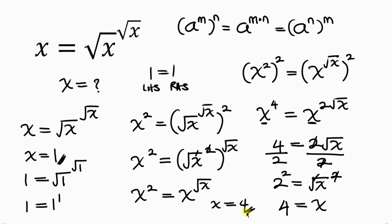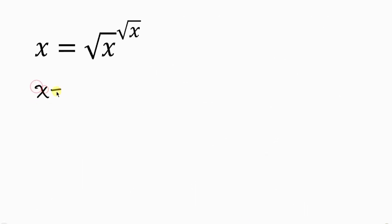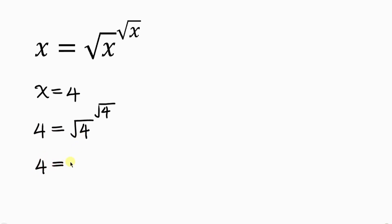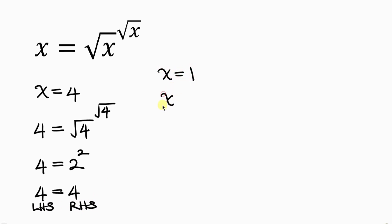Let's verify x equals 4. On the left-hand side we have 4. On the right-hand side, the square root of 4 is 2, raised to the power of the square root of 4, which is also 2. So we get 2 squared equals 4, and the left-hand side equals the right-hand side — confirmed.